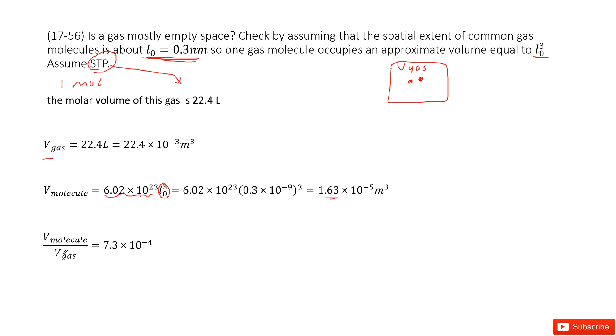Now we can find the ratio, V molecules with V gas. You can see, a super tiny number. That means the majority of the space, the gas is empty space. This point is very small compared to the V gas.